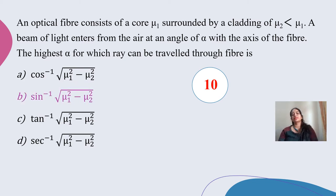We had refractive indices n1 and n2 in the form of mu1 and mu2. The core has refractive index mu1 and the cladding has mu2. The numerical aperture is expressed in the form of square root of (mu1 squared minus mu2 squared).